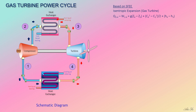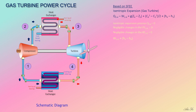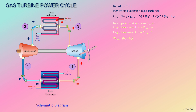Since the turbine is isentropic, q(3→4) equals zero. With negligible potential energy and kinetic energy changes, the equation simplifies to: work(3→4) = h3 − h4. This is the turbine work output. Since h = cp·T, the turbine work output is: W_out = cp_a·(T3 − T4), where cp_a is the specific heat capacity at constant pressure.